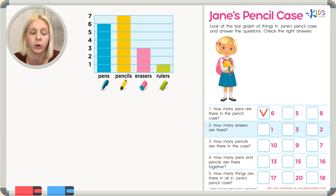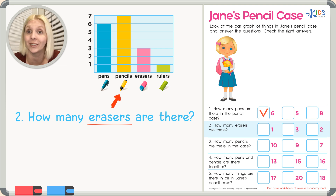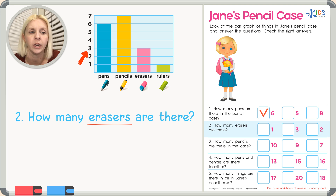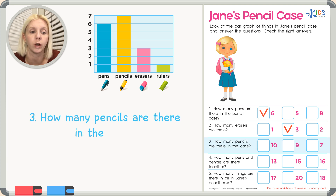Number two says: how many erasers are there? I'm going to underline that, then go find erasers on the graph — pens, pencils, erasers, there it is. We look at where the bar goes across and it goes to the number three. So we've got three erasers. I'm going to put a check next to the number three.